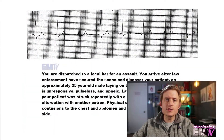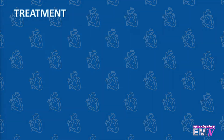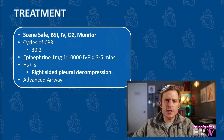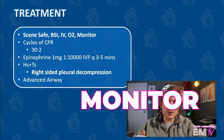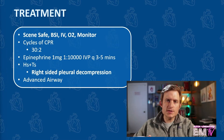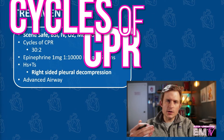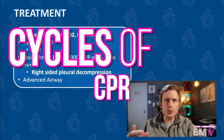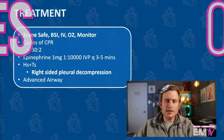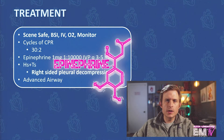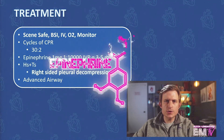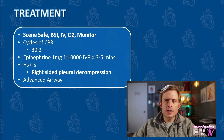Now let's go ahead and move on to the treatment. Just like with all other static cardiology cards, I'll begin my treatment by regurgitating the mantra: scene safe, BSI, IV, O2, monitor. Because this patient is pulseless, I'll then begin performing cycles of CPR at a ratio of 30 compressions to two breaths, making sure that I'm getting an end tidal capnography reading of at least 10 millimeters of mercury. I'll then be giving epinephrine 1 mg of 1:10,000 IV push every 3-5 minutes, and I'll consider my H's and T's.